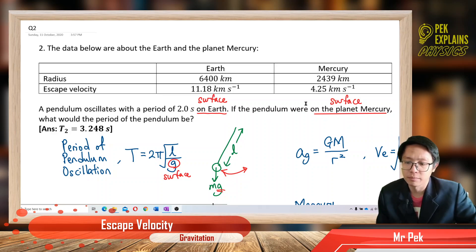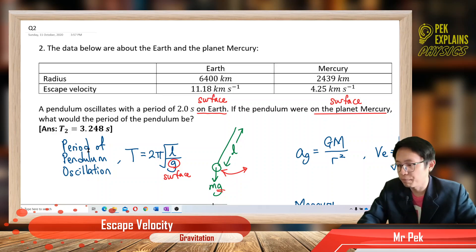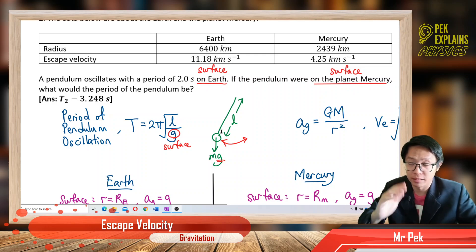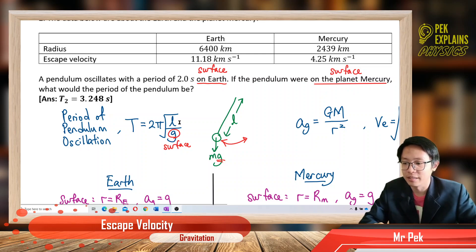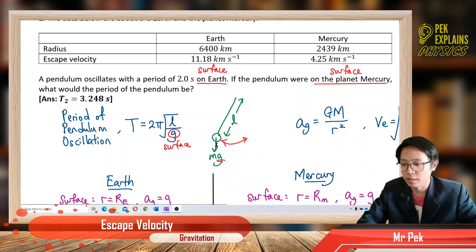If the pendulum is on the planet Mercury — that means on the surface of the planet Mercury — what would be the period of the pendulum? He's talking about changes in period. The formula for the period of pendulum oscillation is 2π√(L/g). Period depends on the length of the pendulum and also the gravitational field strength of the planet. The weight is W = mg.